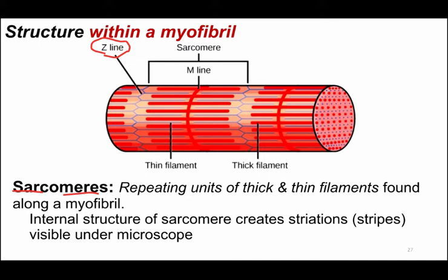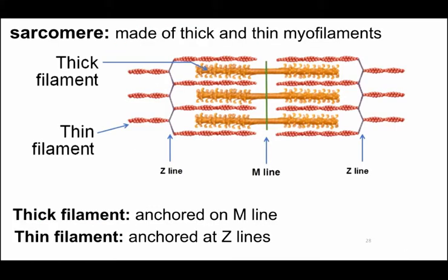It's this repeated structure of sarcomeres that gives us the striations that we can see. You can also see this repeating pattern of thick and thin filaments is present throughout the entire myofibril. Zooming down further, we have the Z-discs — named for an obvious reason — and the M-line; think 'middle.'